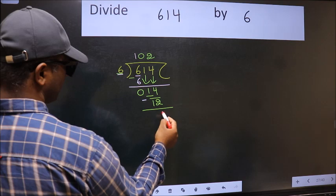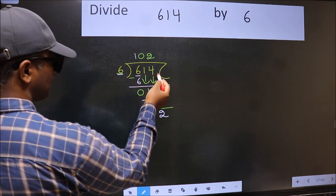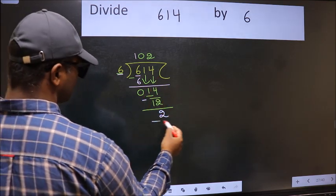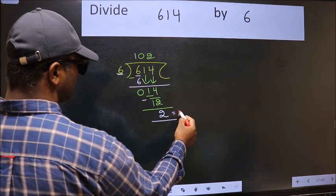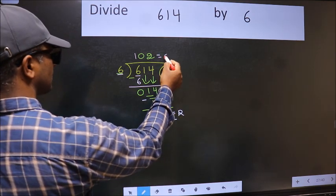Now we should subtract, we get two. No more numbers to bring it down, so we stop here. This is our remainder and this is our quotient.